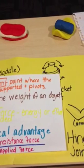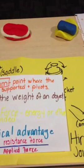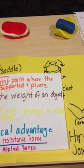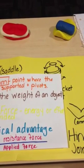A saddle joint has saddle-shaped articular surfaces that are convex in one direction and concave in another.